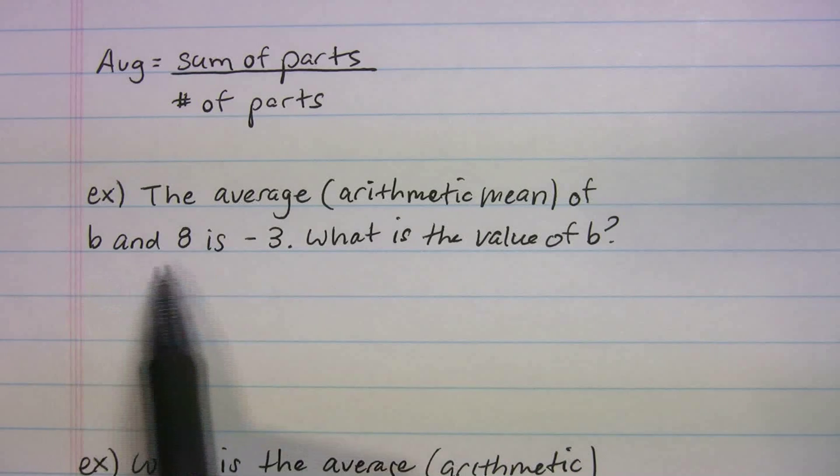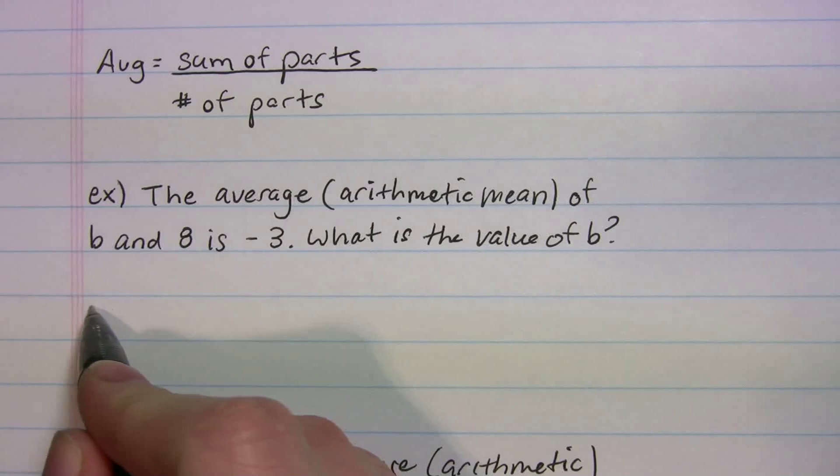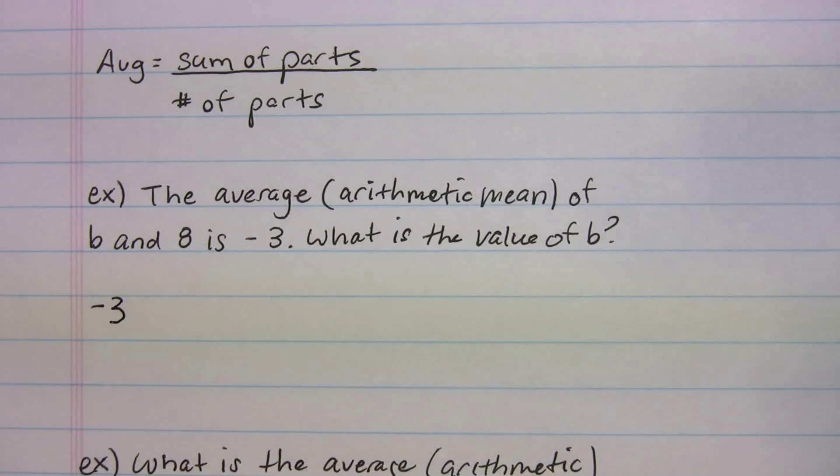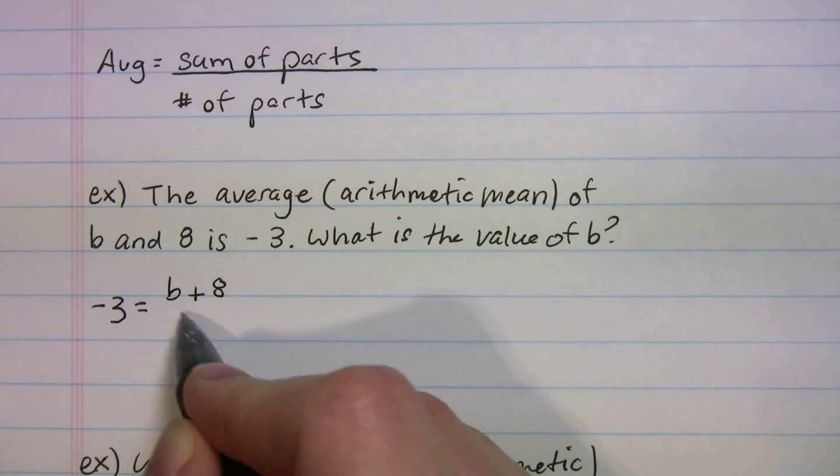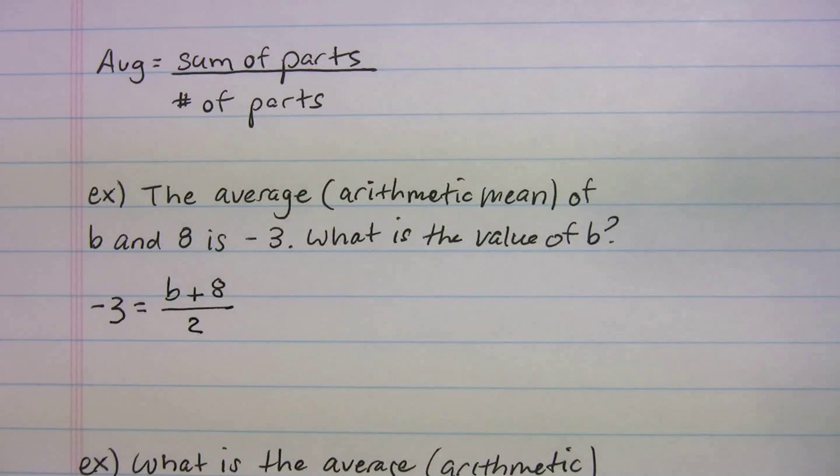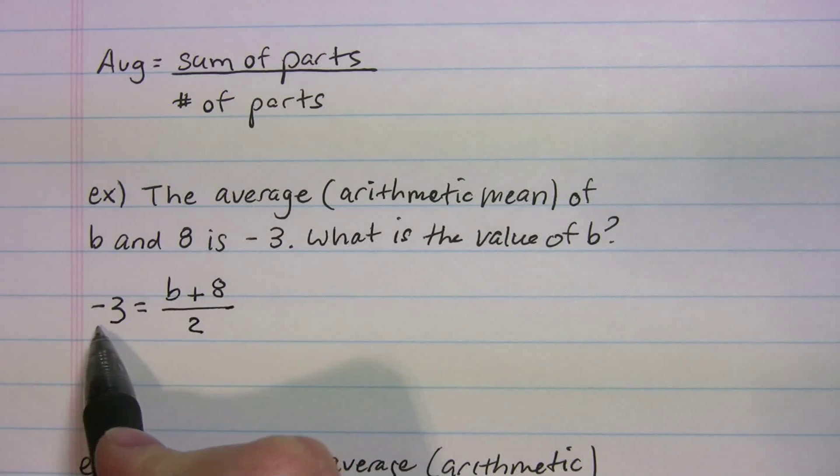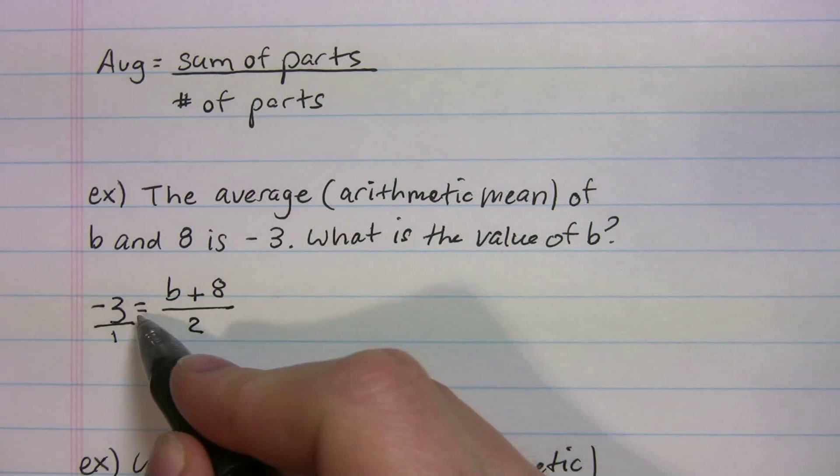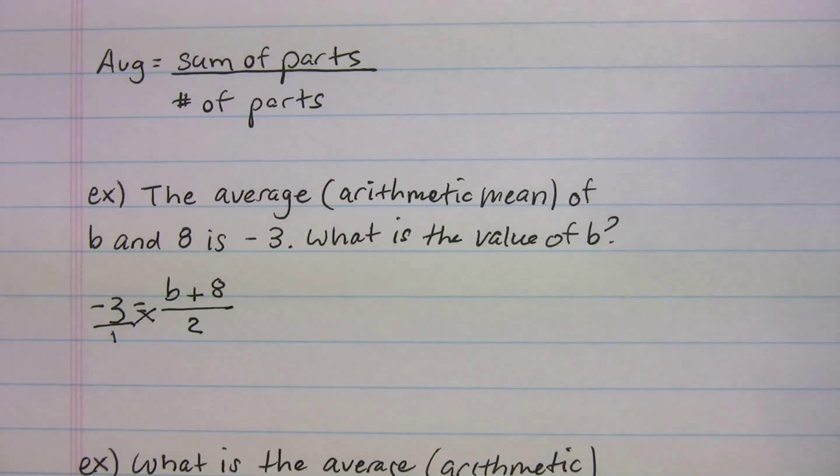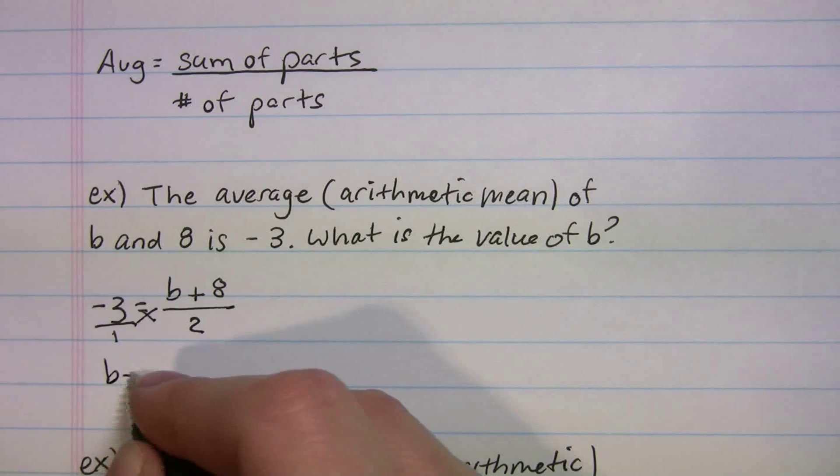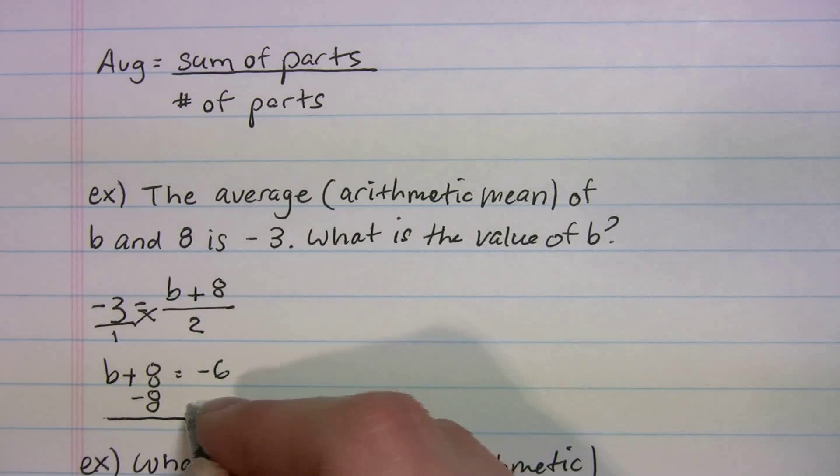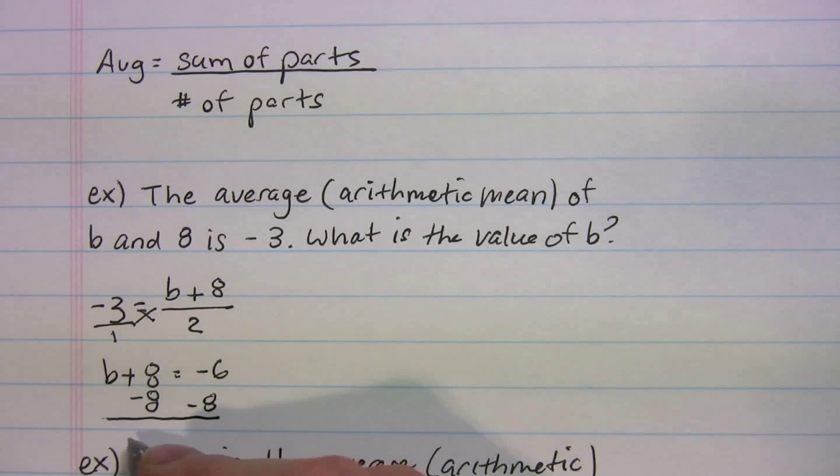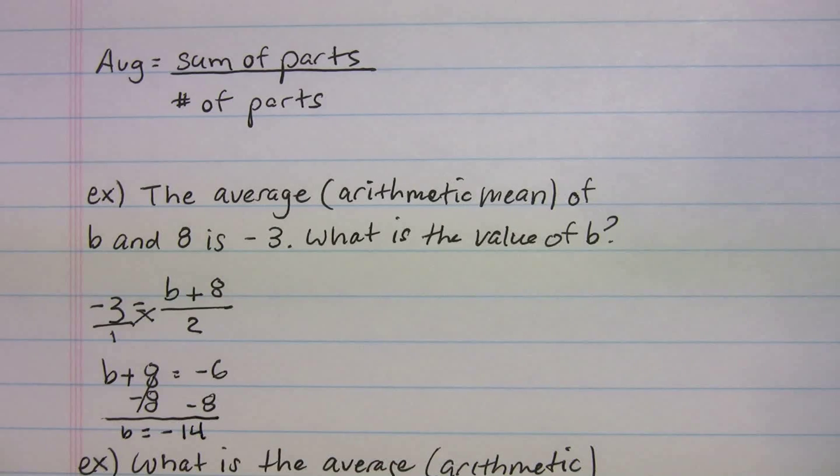So it says the average of b and 8 is negative 3. The average is negative 3. What are we adding? b plus 8, and those are two things. So at this point, you can put your average over 1, and that helps you out so we can recognize that we're going to cross multiply. So you should get b plus 8 equals negative 6. We'll minus the 8, and we get b is equal to negative 14.